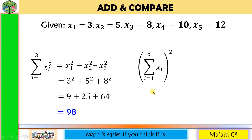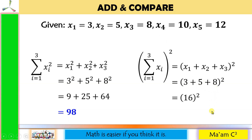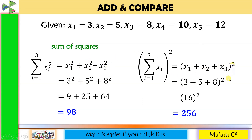For the other expression, the exponent 2 is outside the whole summation. So we first get the summation of X sub I, I going from 1 to 3 — which gives us X sub 1 plus X sub 2 plus X sub 3 — and then we square the result. Substituting: 3 plus 5 is 8, 8 plus 8 is 16, and 16 squared is 256. The first one is the sum of squares, while the second one is the square of the sum.